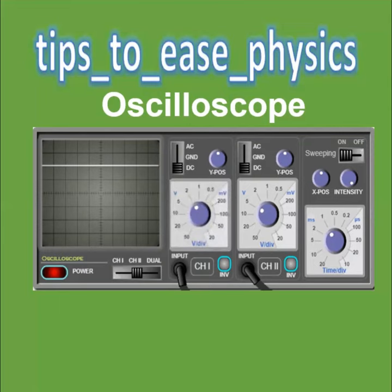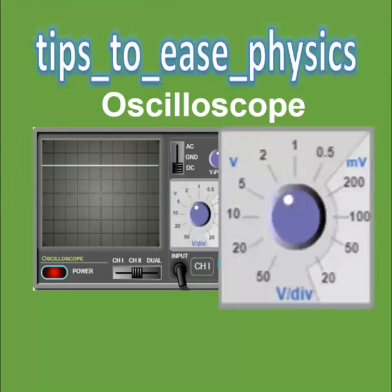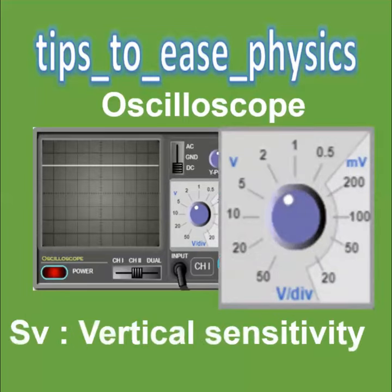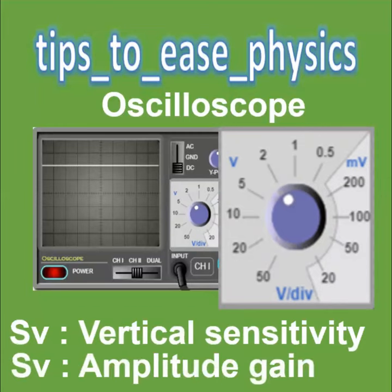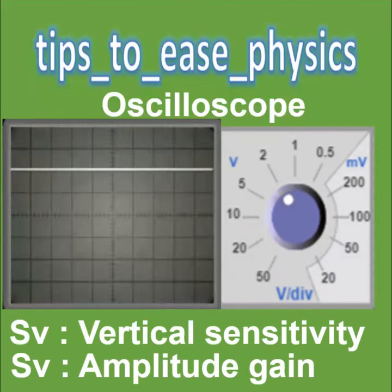What is the volts per division button on the control panel of an oscilloscope? As you can see, it is a scale — we call it the vertical sensitivity (Sv), or we call it the amplitude gain. It gives us the scale that we are using on our graph screen: each division represents a certain voltage. As we see here, the bottom indicates two, meaning that each division represents two volts.